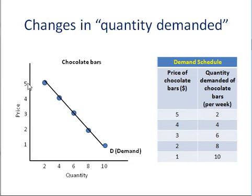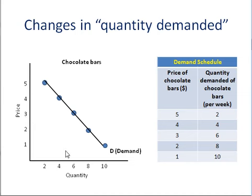Here's my downward sloping demand curve based on this demand schedule of chocolate bars. Now, I want you to note that if I start off with a price of 5, the number of chocolate bars demanded is 2. If I were to lower the price from 5 to 4, the quantity demanded increases from 2 to 4. And if I lower the price even further to 3, the quantity demanded increases from 4 to 6.